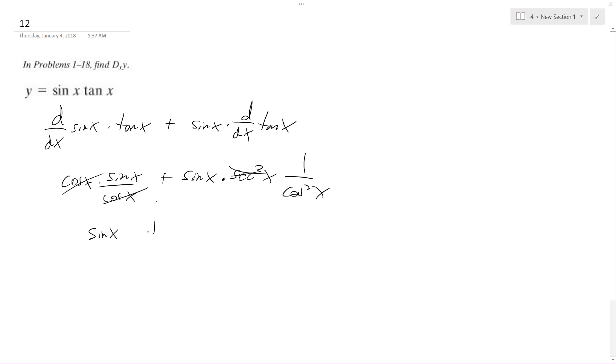And then on the right here, I get sine of x over cosine x is equal to tangent x, and then there's still 1 over cosine x, which is equal to the secant of x.